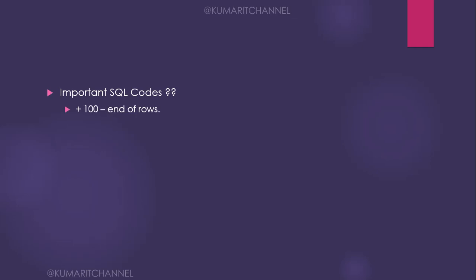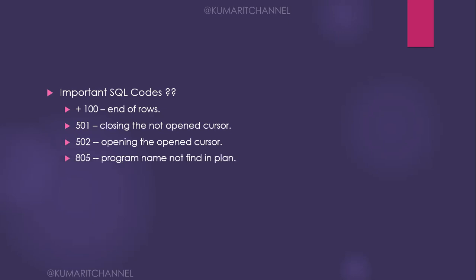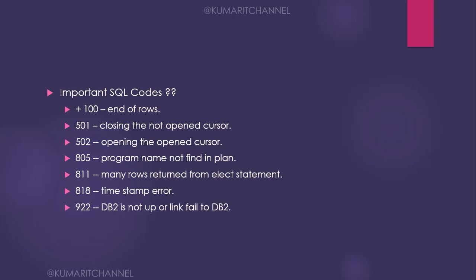The final topic is important SQL codes. +100 means end of rows. -501 means closing a cursor that is not open. -502 means you are trying to open a cursor that is already open. -805 means program not found in plan — there is an issue with the DB2 bind. -811 means many rows returned from a SELECT statement; you need to use a cursor. -818 is a timestamp error indicating an issue with DB2 pre-compilation and binding.